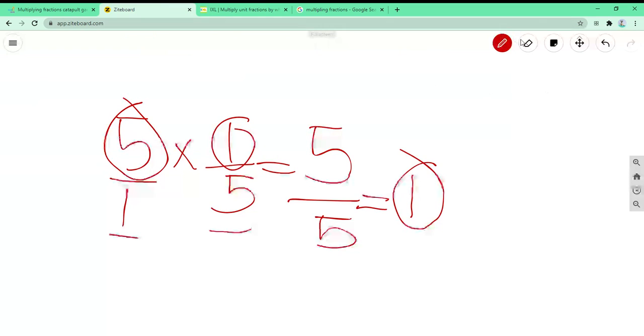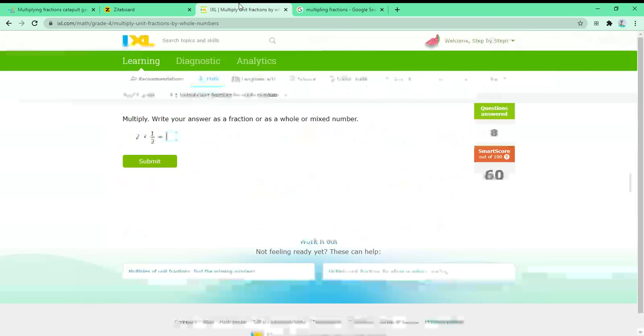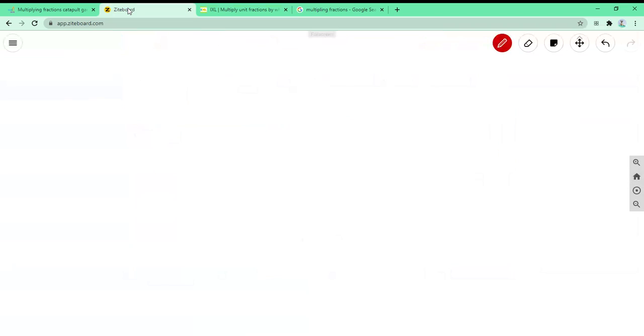Alright, next problem. We have 2 and 1 half, last question. 2 times 1 half. And if you want to go back to the video again, don't worry, it doesn't matter. So let's do over 1, because we know that 2 divided by 1 is 2. So we can make it a little simpler.